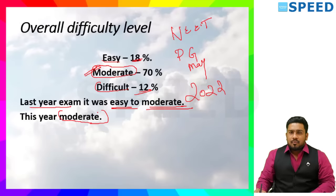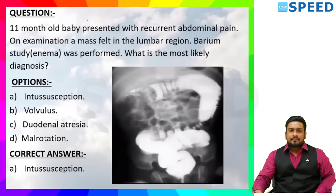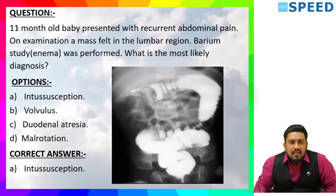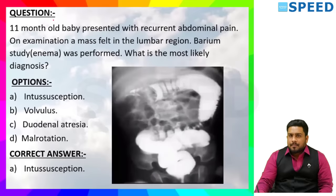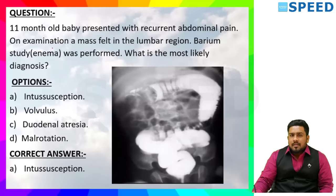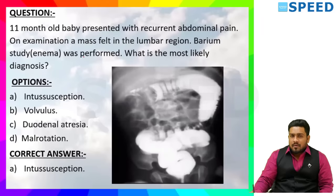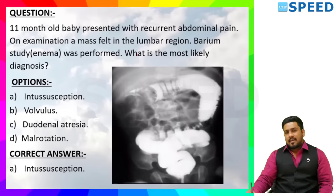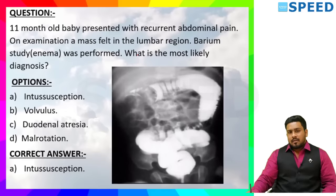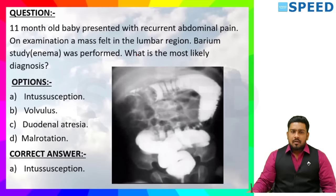Next question: An 11-month-old baby presented with recurrent abdominal pain. On examination, a mass was felt in the lumbar region. Barium enema was performed. What is the most likely diagnosis? The options are intussusception, volvulus, duodenal atresia, and malrotation.